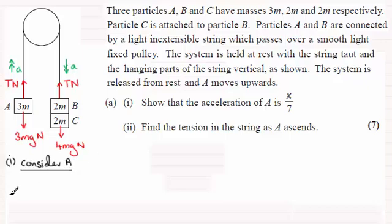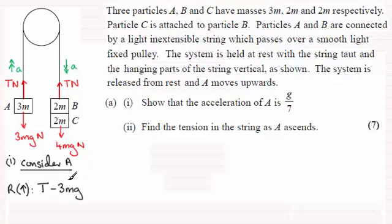Consider A, and we apply the equation of motion — force equals mass times acceleration — taking upwards as positive. So we've got T acting upwards and then the weight acting downwards, minus 3mg. That's the overall force on A, equal to mass times acceleration: 3m times a. So we've got two unknowns, the tension T and the acceleration a — simultaneous equations. I'll number that equation one.